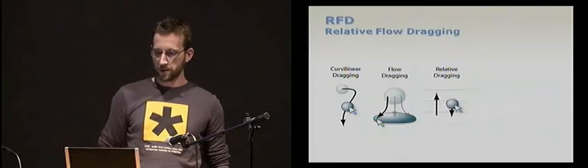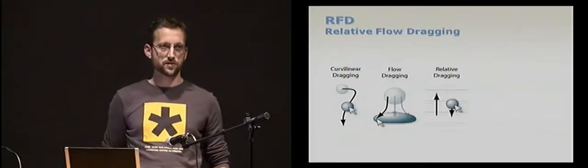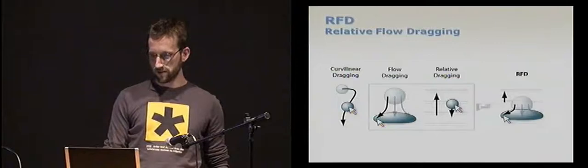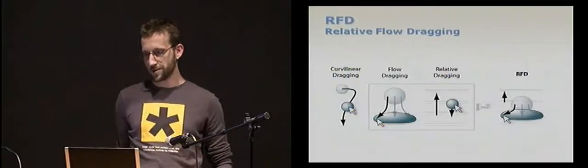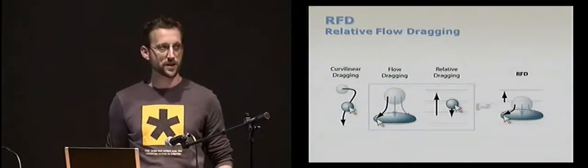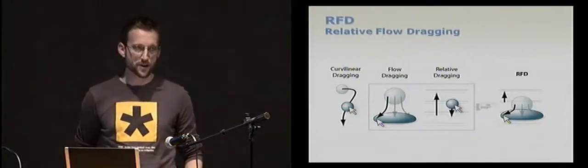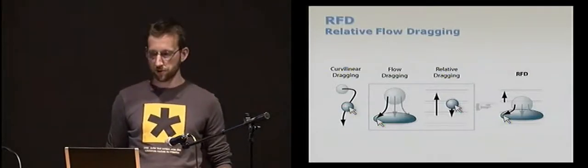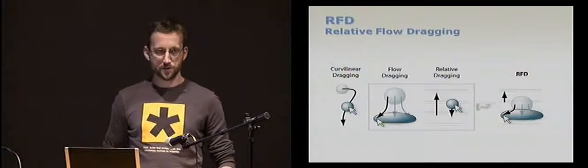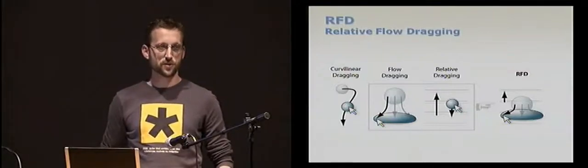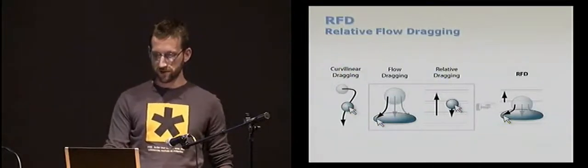So, so far, I've introduced three non-classical types of direct manipulation techniques which have been little studied before. Curvilinear dragging, flow dragging, which is more general. Relative dragging, which doesn't have to be 1D, can be 2D as well. And if you combine flow dragging with relative dragging, you have what we call relative flow dragging or RFD. And you can see RFD as a general solution to the control of arbitrary, continuous, one degree of freedom motions. And that's the approach we use for video browsing.